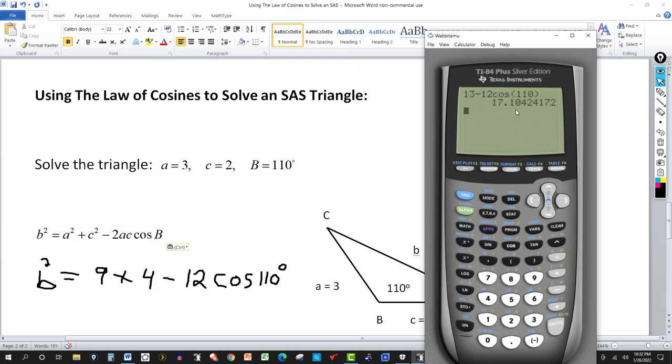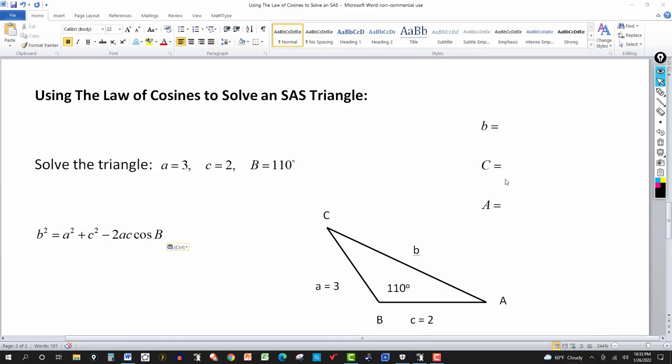And we get 17.104 and so on. b² is equal to that, so we want the square root of that. I go to my catalog here, it's the square root. And I want the square root of that last answer, so I'll hit second answer and hit enter. And I get 4.13 or 4.14. So this tells me then that b is equal to 4.14 units. And then we'll fill in this answer here for b, so we have b equal to 4.14.